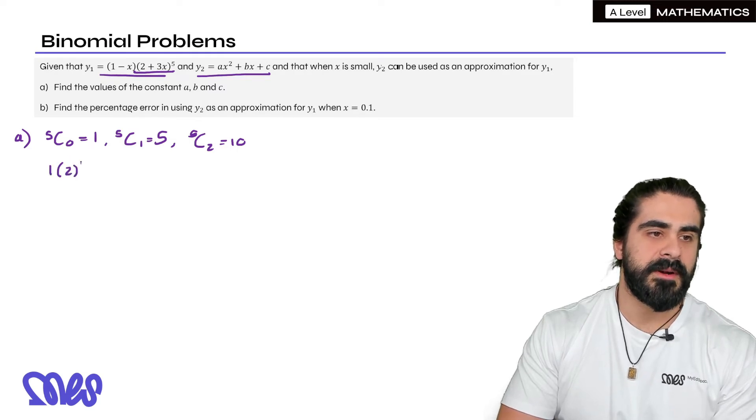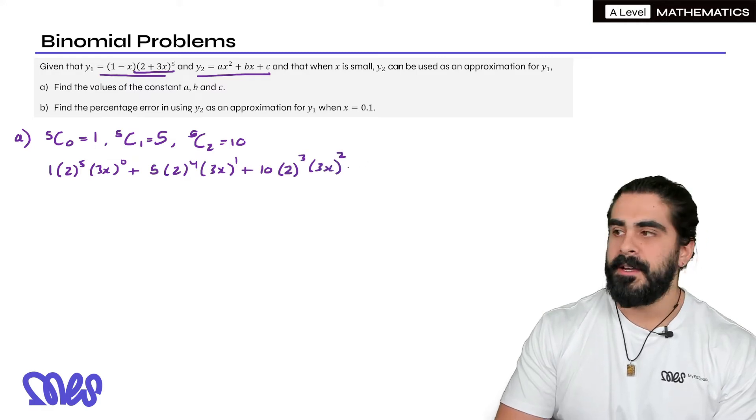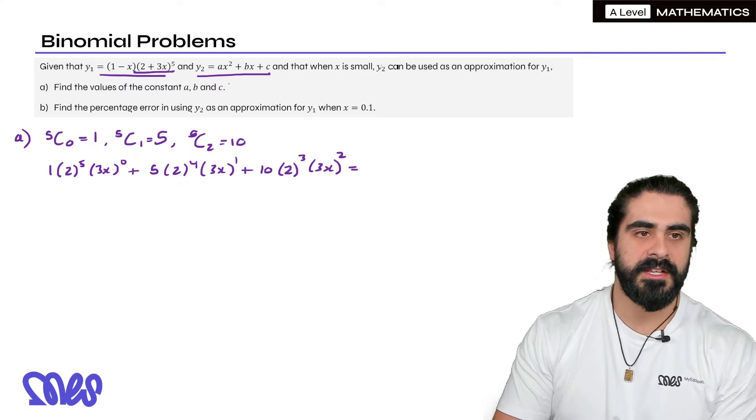And then we can do our expansion for (2 + 3x)^5. So it would be 1 times 2^5 times (3x)^0 plus 5 times 2^4 times 3x^1 plus 10 times 2^3 times (3x)^2. And now we just need to type all of this in the calculator. So remember we don't need to do any more than this because we're only going up to the x squared term.